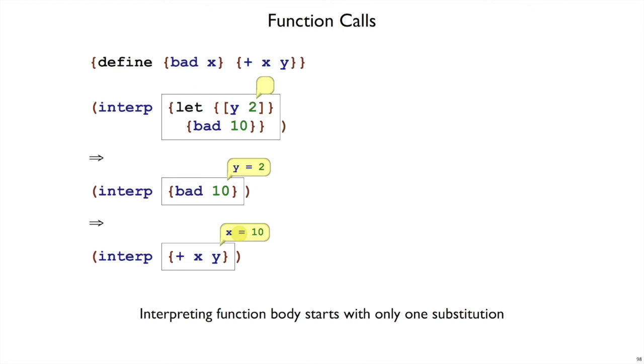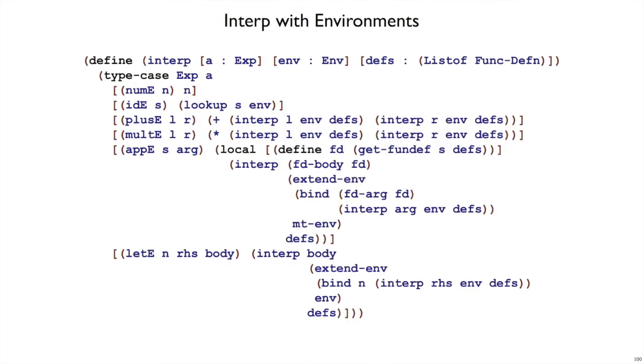That means that we're binding x starting with the empty environment every time we call a function. Every function starts out with the empty environment and then a binding for its argument. So when you put all those pieces together, then we've got a complete interpreter using environments.